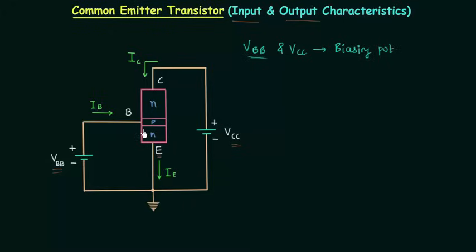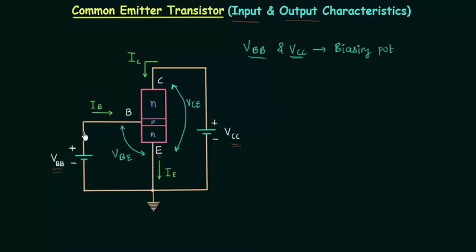VBB is used to forward bias the emitter base junction and VCC is used to reverse bias the collector base junction. IB is the input current and IC is the output current. The input voltage is VBE and the output voltage is VCE. Generally we have series resistances in the circuit, but for simplicity I have not included them. In this scenario VBE is not equal to VBB and VCE is not equal to VCC.